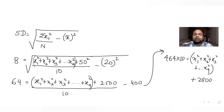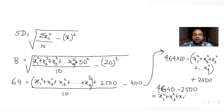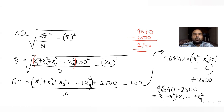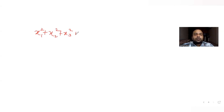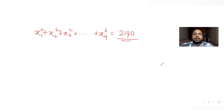From 4640 − 2500 we get 2140. So the sum of squares of the first nine observations — that is x1² + x2² + ... + x9² — equals 2140. That is our key intermediate result.